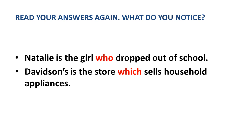Now let's move to the next step. Read your answers again. What do you notice? Nathalie is the girl who dropped out of school. Davidson's is the store which sells household appliances. What can you notice? Some words are written in a different color — who and which. What do you think these words are? What do you think their function in the text is?